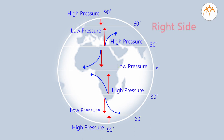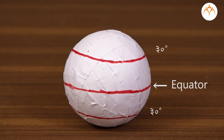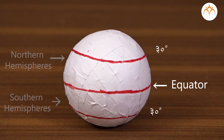The students will learn about the change in the direction of winds in the northern and southern hemispheres. In the northern hemisphere they turn to the right from their original direction, and in the southern hemisphere the direction changes to the left from their original direction.